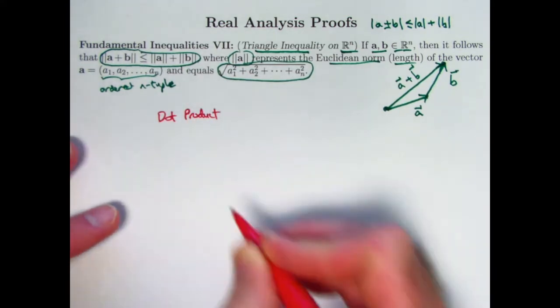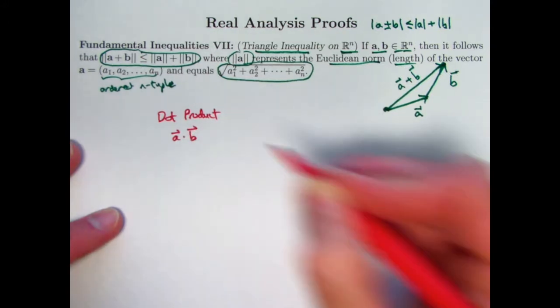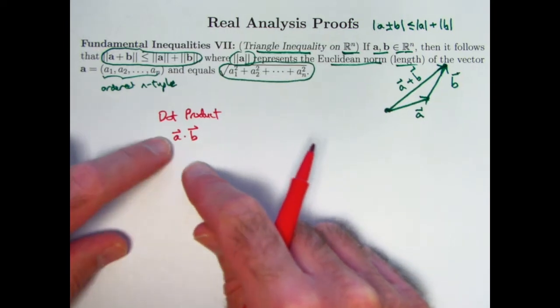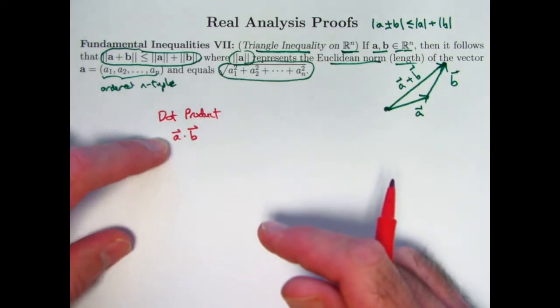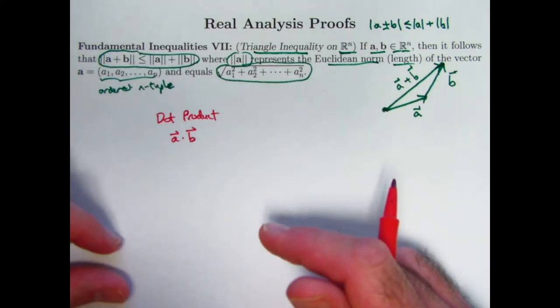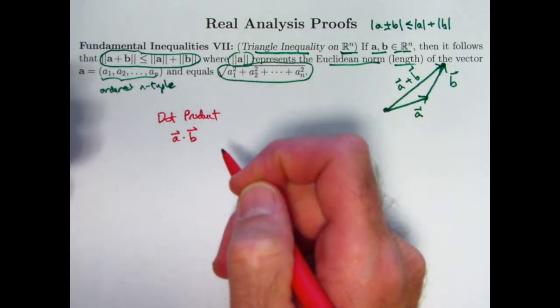So what is the dot product of two vectors? Well, there's not just a single dot product, sometimes called an inner product between vectors, but there is sort of a standard dot product that people are most familiar with. If you've got two vectors a and b, which note I'm going to use little half arrows above these vectors to indicate that they are vectors, a is this ordered n-tuple, and b would be a corresponding ordered n-tuple b1, b2, through bn.